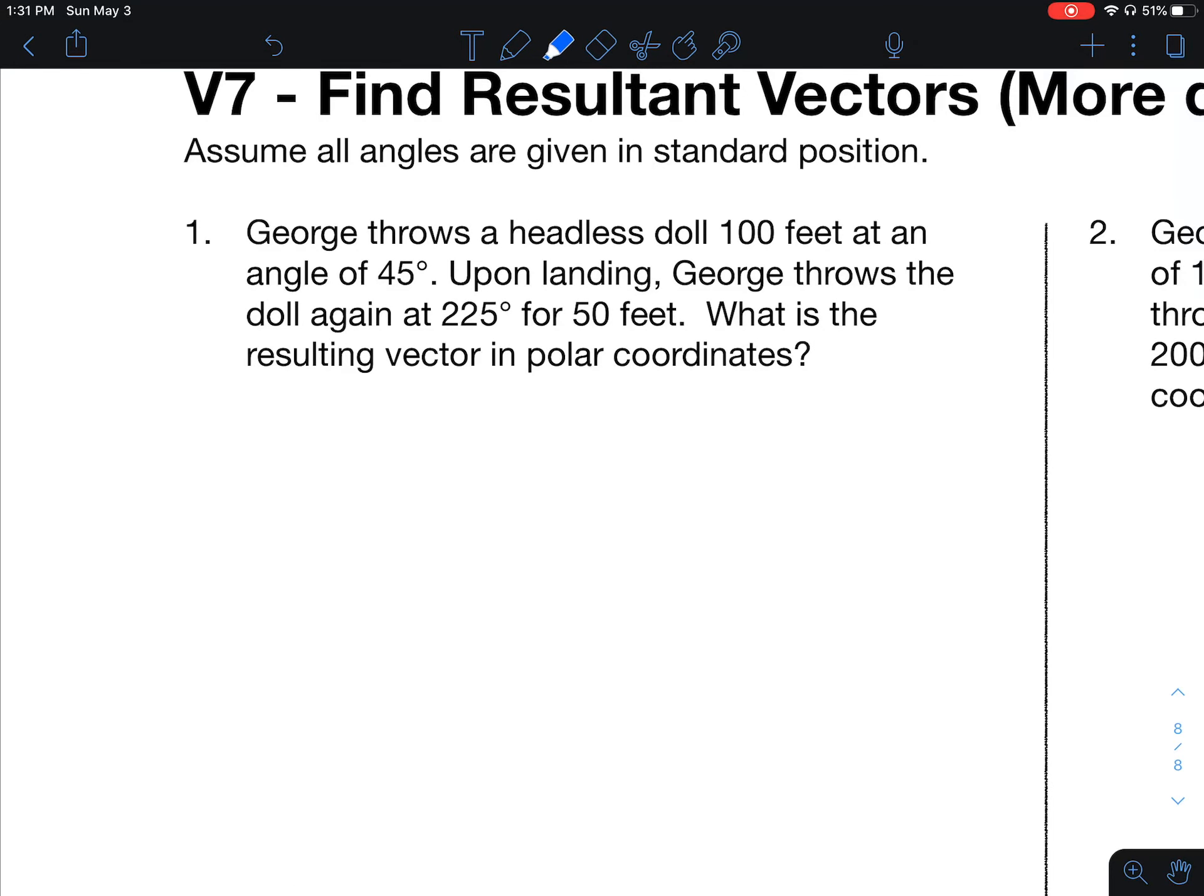George throws a headless doll 100 feet at an angle of 45 degrees. Upon landing, George throws the doll again at 225 degrees for 50 feet. What's the resulting vector in polar coordinates?